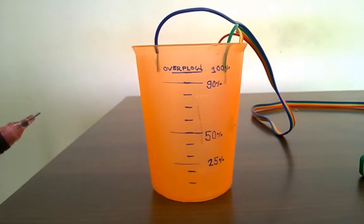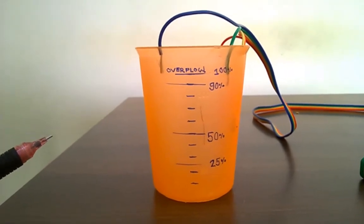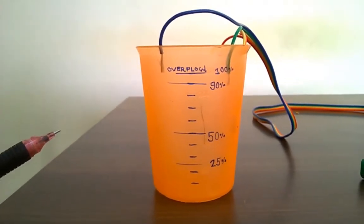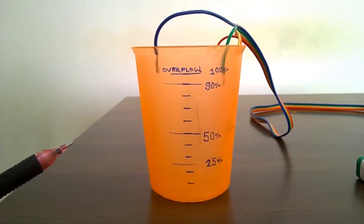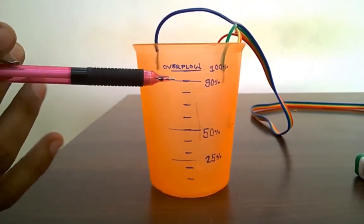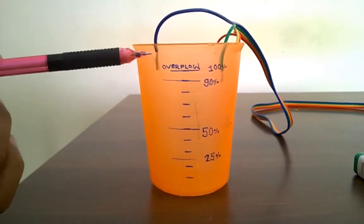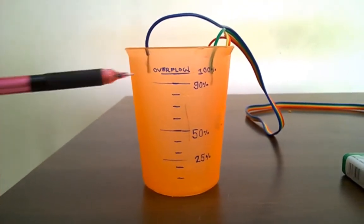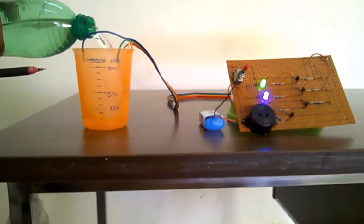Here you see the practical water level indicator. We have chosen the water tank with a glass. We mark it at 25%, 50%, 90%, and 100% when overflow of the tank.